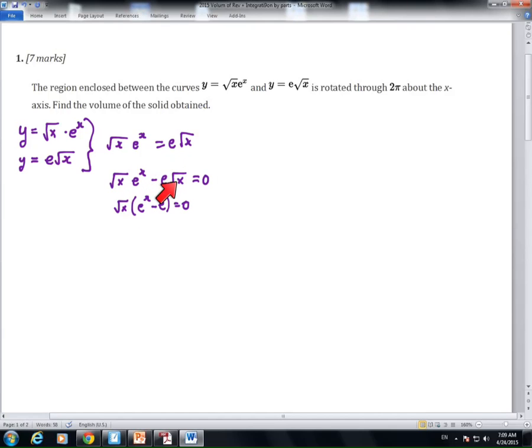and e times square root of x, and then factor out a square root of x, we get a product of two numbers whose product is zero. Using the zero product principle, we find x equals zero, or x equals one.